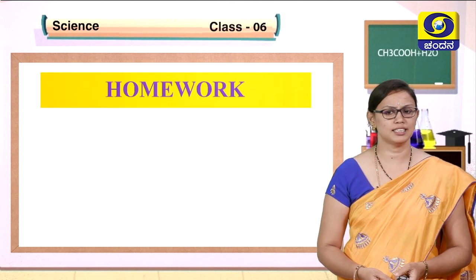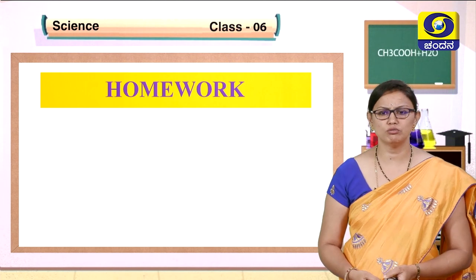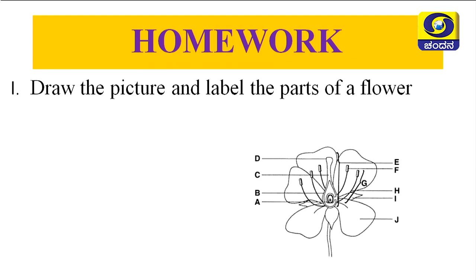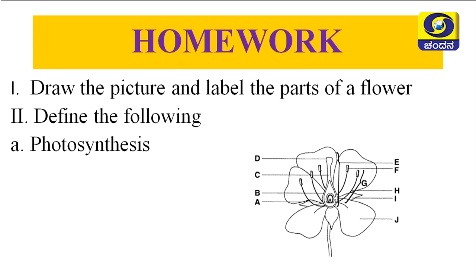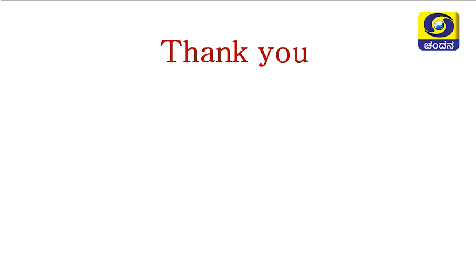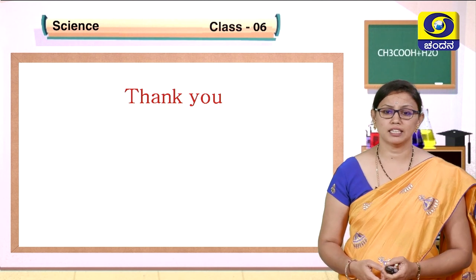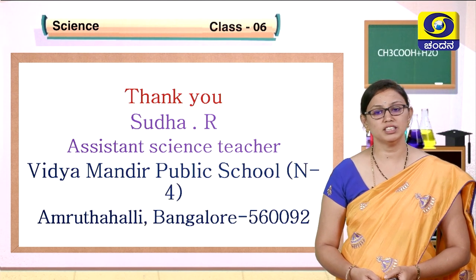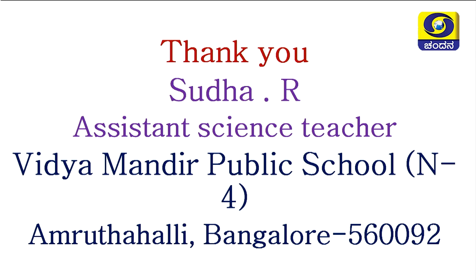For homework: draw a picture and label the parts of a flower; and define the following terms — photosynthesis, transpiration, stomata, midrib, and venation. I hope you have understood. By this we have completed chapter 7. Thank you, children. I am Sudha R, working as an assistant science teacher at Vidya Mandir Public School, North Block, Amruthalli, Bangalore.